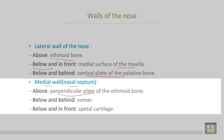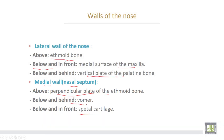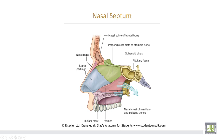The medial wall or nasal septum is formed from above by the perpendicular plate of the ethmoid bone, and below and in front is formed by the septal cartilage.